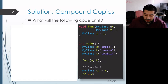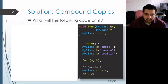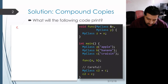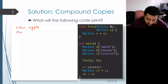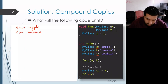Let's start off with main. The first thing that happens in main is that we construct a MyClass object with the string 'apple', so that will print out 'ctor apple'. Then we follow that with another MyClass object with string 'banana', so we get 'ctor banana', and finally we construct another MyClass object with 'crazen', so we get 'ctor crazen'.